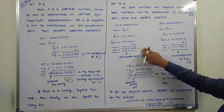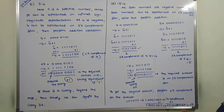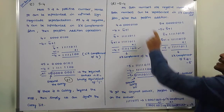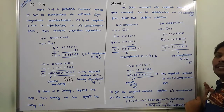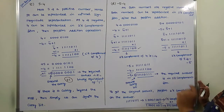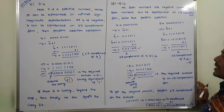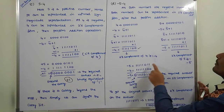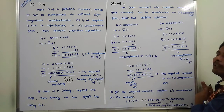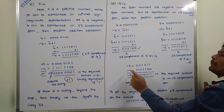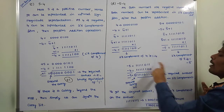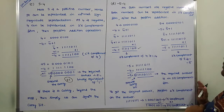So the two's complement of 4 is minus 4. Once both numbers minus 5 and minus 4 are represented in two's complement form, we perform the addition operation. This is the two's complement of 5, that is minus 5, and this is the binary equivalent. The two's complement of 4, that is minus 4, is the other binary equivalent. We now perform the addition operation.